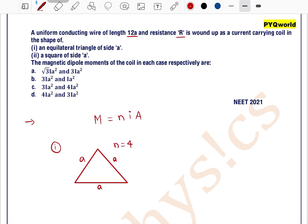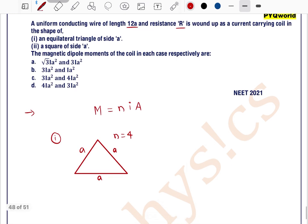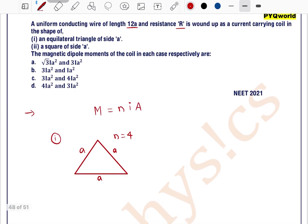As we know the wire length is 12a, so we can say there are 4 number of turns having length of 3a. 3a into 4a is 12a. So we can write N as 4.